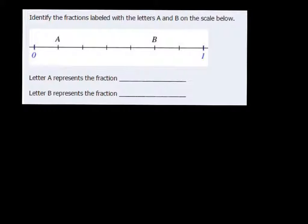Okay, here we want to identify the fractions labeled with the letters A and B on the scale below. We can see that A and B are between 0 and 1. Let's count up how many spaces there are between 0 and 1 to find out what each fraction is worth.